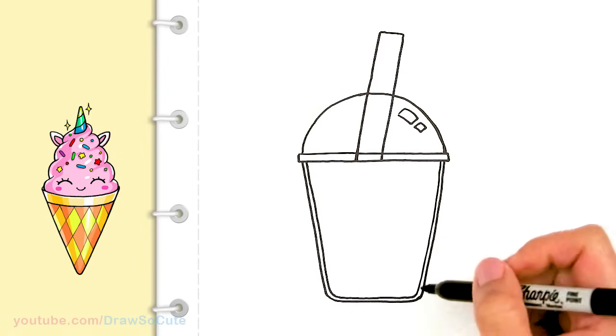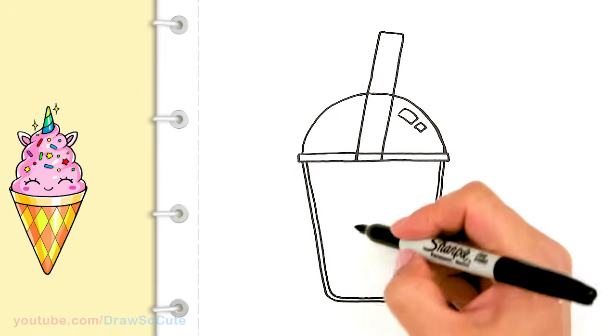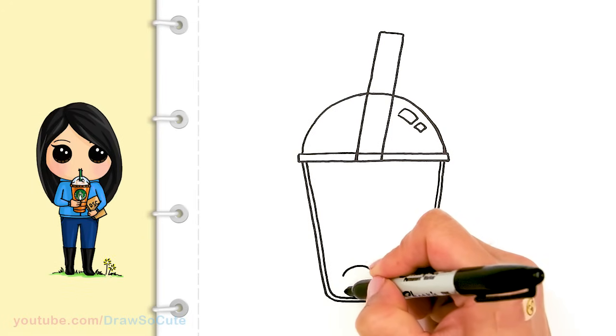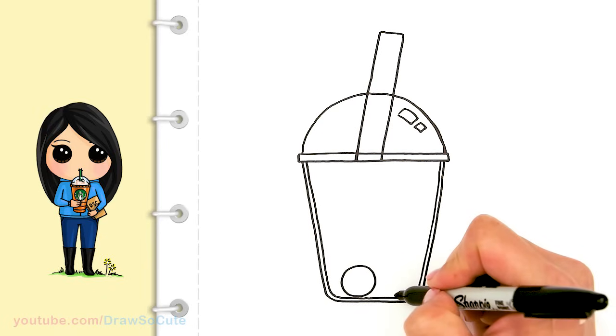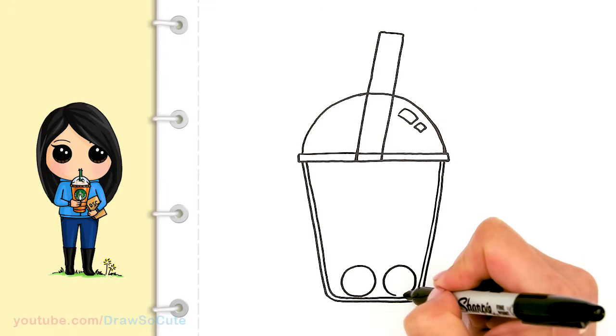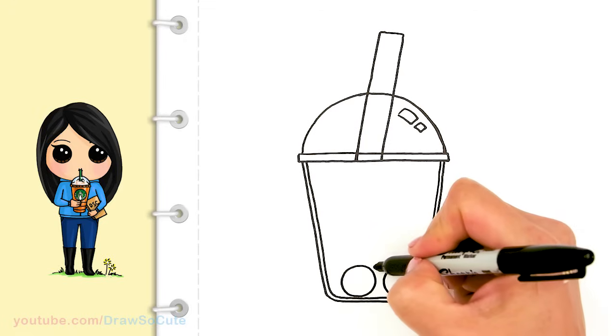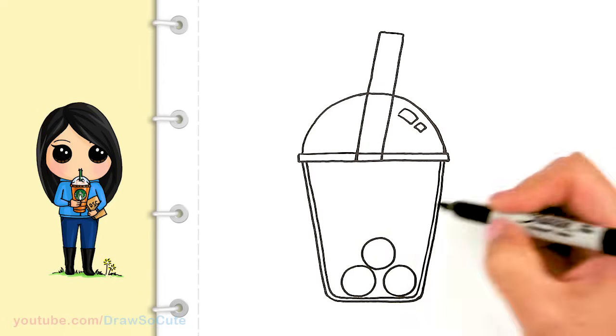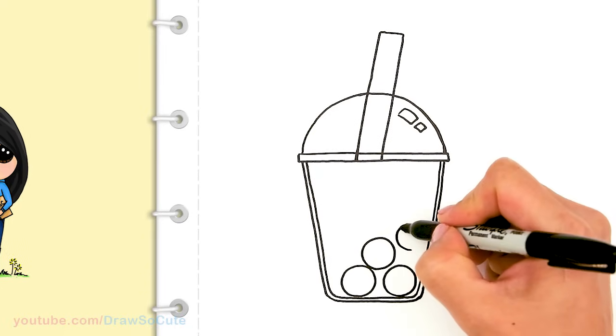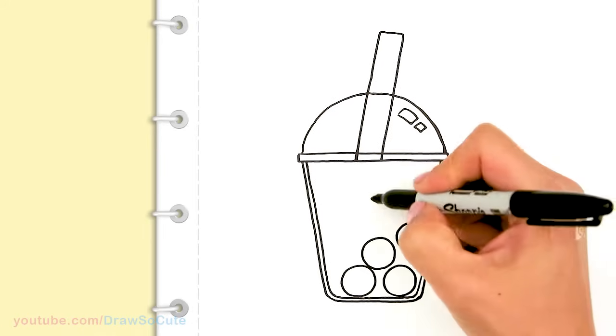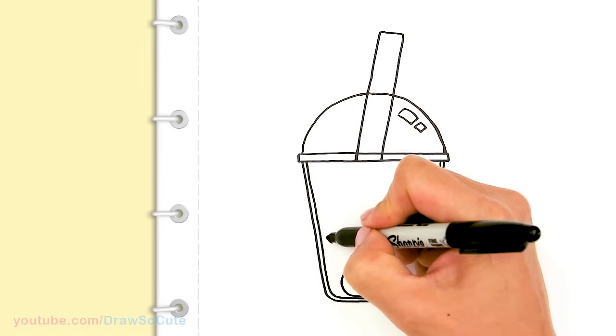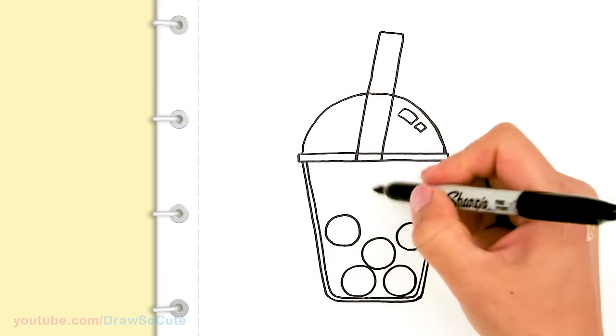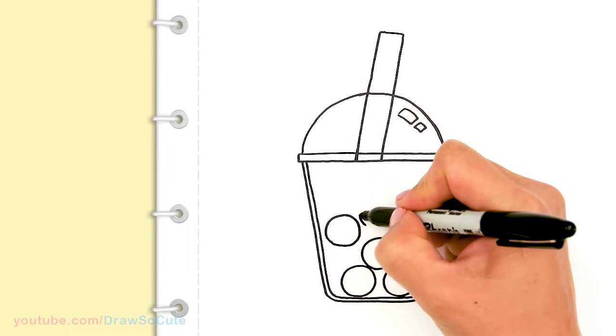And then now to draw our cute little boba. So I'm going to come in here and just draw a bunch of circles. Let's start right here and draw one circle. And another one right here towards the bottom. So I'm just kind of aiming to make them about the same size. This one's stuck to that one. Another one here. So you can draw as many or as little as you want. Come over here and draw another one. That one's a little big and wobbly. Maybe one more right here.